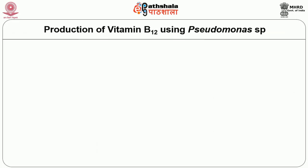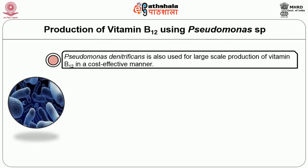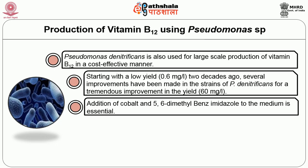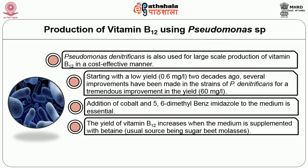The production of vitamin B12 using Pseudomonas species also has a major role. Pseudomonas denitrificans is used for large-scale production of vitamin B12 in a cost-effective manner. Starting with a low yield of 0.6 mg per litre two decades ago, several improvements have been made in strains of Pseudomonas denitrificans for a tremendous improvement in yield to 60 mg per litre. Addition of cobalt and 5,6-dimethylbenzimidazole to the medium is essential.